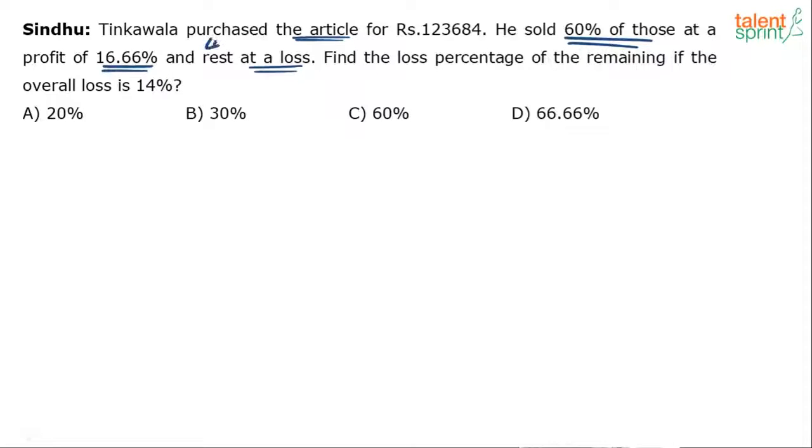Rest is what? 40%. If 60% are sold at profit, the remaining will be 40%. And these 40% of the articles are sold at a loss. Find the loss percentage of the remaining. Meaning on this 40% what was the loss? If the overall loss was 14%.